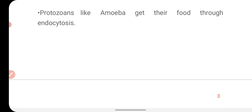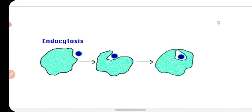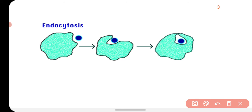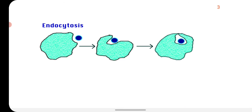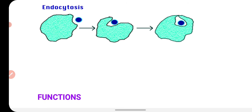Protozoa like amoeba use endocytosis. As you can see in this diagram, this is the amoeba cell membrane, and this is the food. When food is near, the cell membrane invaginates, folds, and inverts, making a vacuole-like structure called a food vacuole, and this food vacuole is trapped inside. So the flexibility of the cell membrane is very helpful to take substances into the cell.